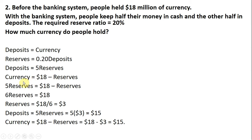Currency will equal $18 million minus reserves — the amount that people deposited in the banking system. And since currency equals deposits, I'm going to make a substitution. Since currency equals deposits, for currency I'm going to plug in 5 times reserves. Because deposits equal currency, I'm plugging in 5 times reserves, and now we've got one equation and one unknown.